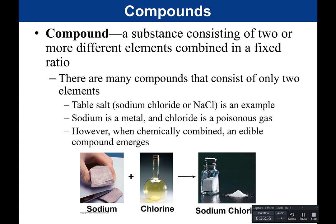A compound is a substance consisting of two or more different elements combined in a fixed ratio. Many compounds consist of only two elements. An example would be table salt, or sodium chloride, also written NaCl — Na for sodium, Cl for chloride. Interestingly, sodium itself is a metal and chlorine is a poisonous gas, yet when you put them together, you get an emergent property: this new compound sodium chloride, which when combined is an edible compound. This is an example of a compound and an emergent property.